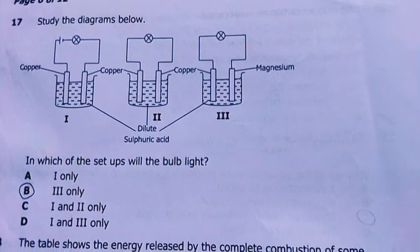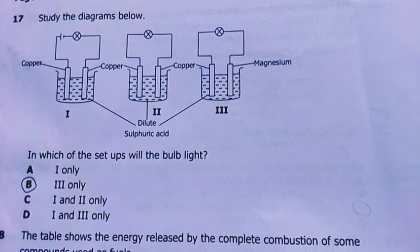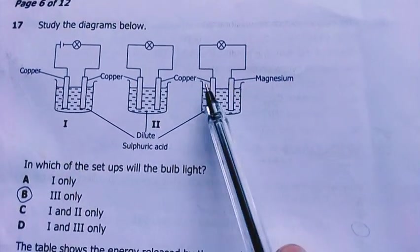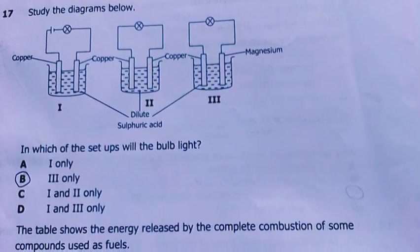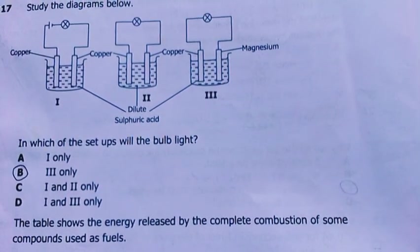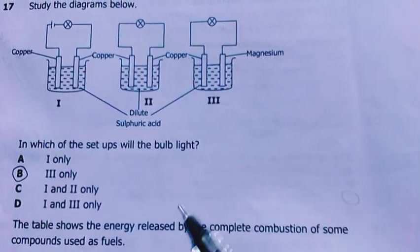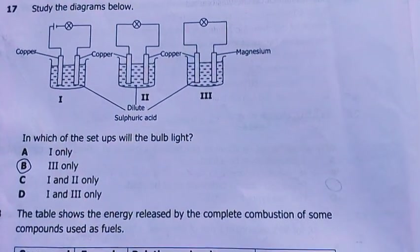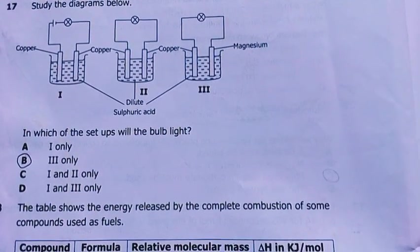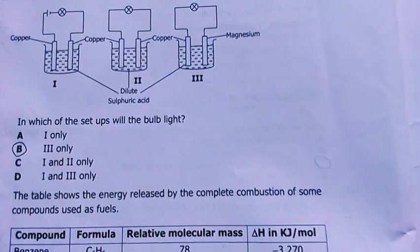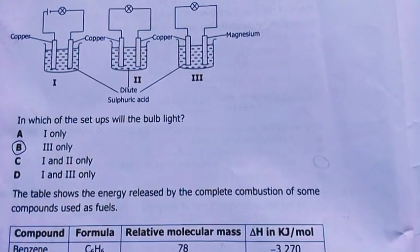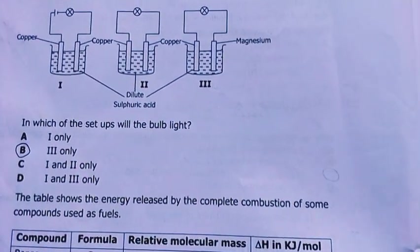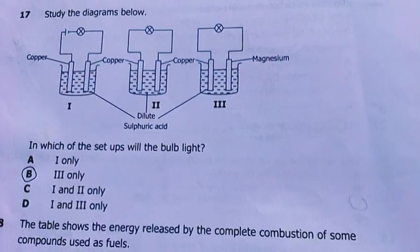Study the diagrams below. In which of the setups would the bulb light up? My answer is B, where you have copper and magnesium. The two have different reactivity strengths or different electropositivity values. Here they are all copper, so they are of the same. But here, because of the difference in electropositivity, one metal is more positive than the other, so they can exchange electrons. The more electropositive, meaning the more reactive one, will lose electrons. My answer is 3 only, which is B.